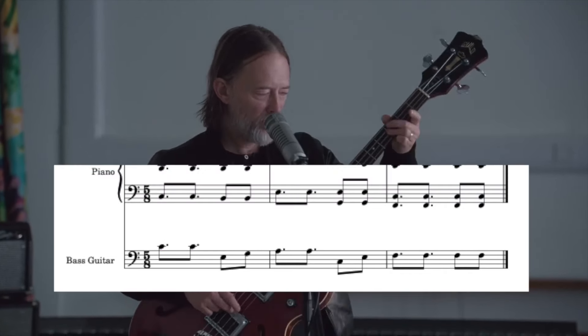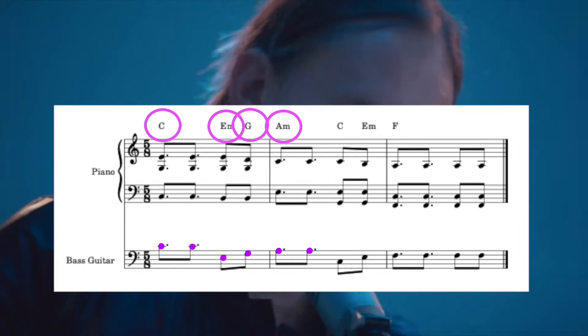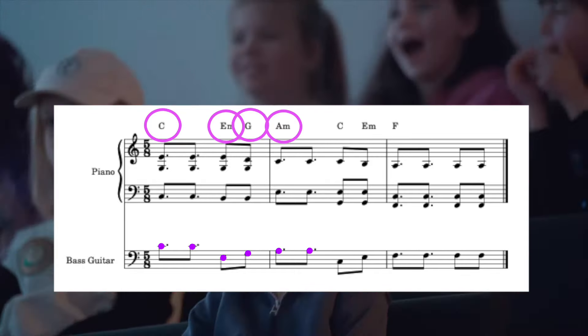Correct me if I'm wrong here, but I think the piano is playing C, E minor, G, A minor, and the bass is playing the root of each of these chords. I think this is a very clever arrangement, as the piano chords provide context to the bass line, slowly revealing the arrangement to the listener.